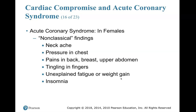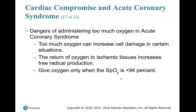Non-classical findings in females include neck ache, pressure in the chest, pains in back, breast, upper abdomen, tingling in fingers, unexplained fatigue or weight gain, and insomnia. Regarding the dangers of administering too much oxygen in acute coronary syndrome: too much oxygen can increase cell damage in certain situations. The return of oxygen to ischemic tissue increases free radical production. Give oxygen only when SpO2 is less than 94%.